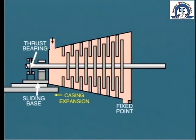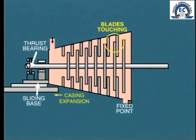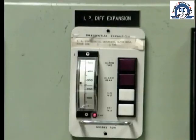It would be convenient if both the rotor and the shell were to expand at the same rate, but in practice this does not happen. The reason is that the rotor is considerably lighter than the shell, and therefore it expands more rapidly. So during the initial loading of a cold machine, the rotor expands at a greater rate, and we run the risk of the rotating blades coming into contact with the next stage of stationary blades. This differential expansion must be kept within certain limits by restricting the rate of change of load on the machine.